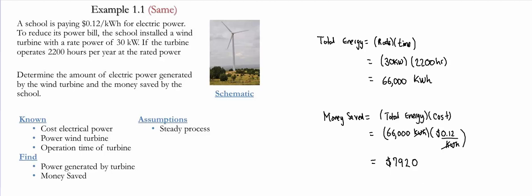To review, we calculated the total energy that was generated by the turbine. This is equal to the amount of energy that will be replaced in the electrical power. Once we got this value, we multiplied by the cost that it would have been to pay for that electrical power. And that provides us the money that will be saved by the school.